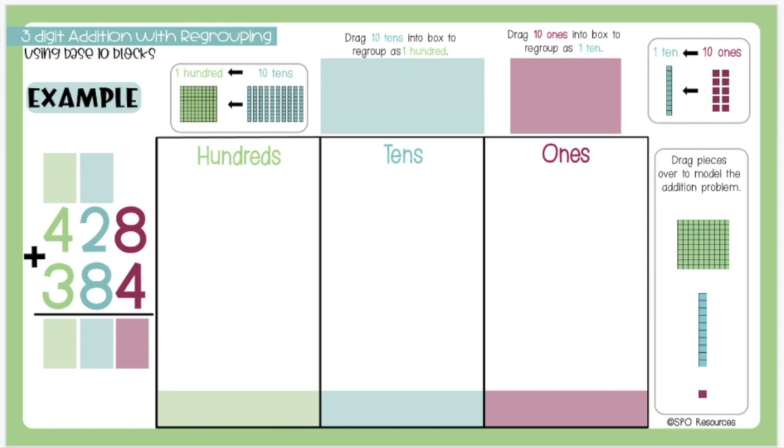We'll start by looking at our problem. We have 428 plus 384. I'm going to start by representing these numbers using my base 10 blocks. I will show 428 by dragging over 4 hundreds, 2 tens, and 8 ones.